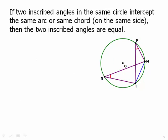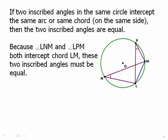If two inscribed angles in the same circle intercept the same arc or the same chord, and intersect the same chord on the same side, then the two inscribed angles are equal. Here we have two inscribed angles intersecting chord LM, and these two must be equal. They have to intersect on the same side of the chord. If we drew an angle on the other side, that would obviously be a much wider angle — in fact, it would be supplementary to the two angles at M and P.